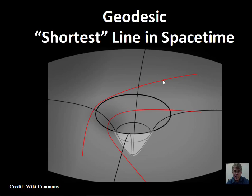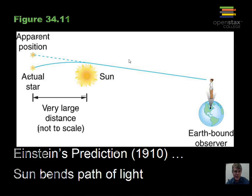This result — that mass distorts space-time and produces an observable change in the path of light — made Einstein world famous when it came out.